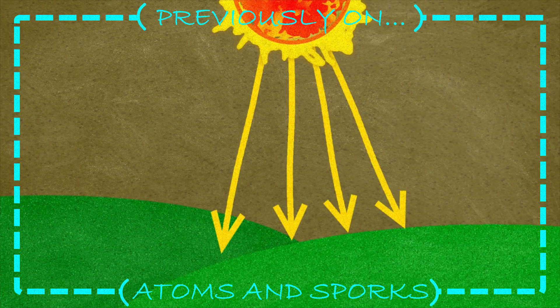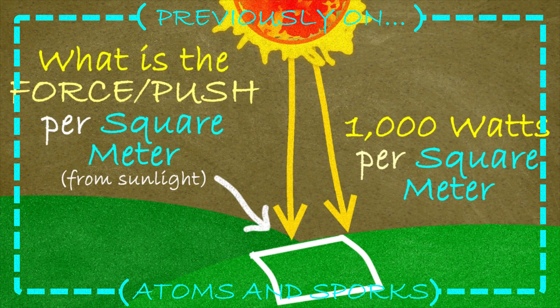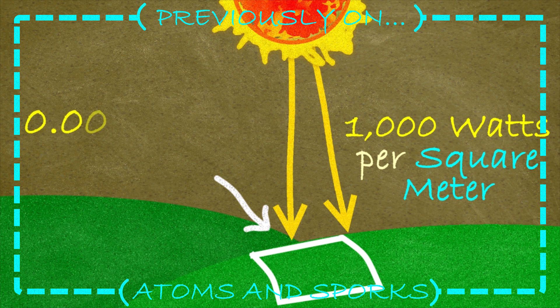Something we've done a whole video on before on this channel is the simple fact that light has momentum. When you illuminate something, that light exerts force on it. Now it's very, very small on something like a sunny day. Sunlight is only exerting a pushing force in like the nano newtons, which is why we don't notice it, but it is there.